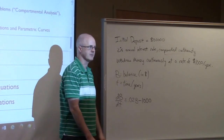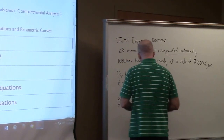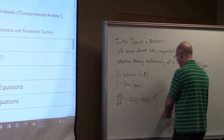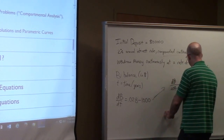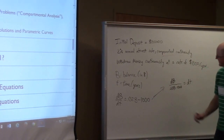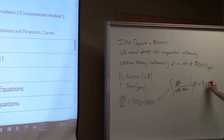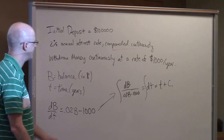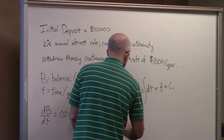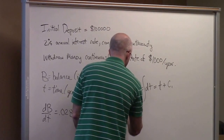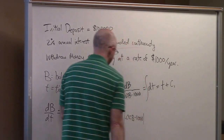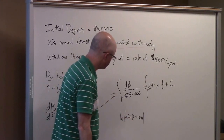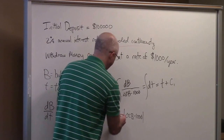Let's solve the differential equation by separating variables: dB / (0.02B − 1000) = dT. Integrating both sides — the right-hand side is easy. The left-hand side gives (1/0.02) · ln|0.02B − 1000|, because when you differentiate using the chain rule you get an extra factor of 0.02 which requires dividing by 0.02, the same as multiplying by 50.